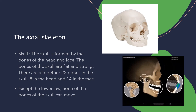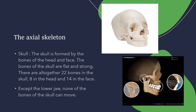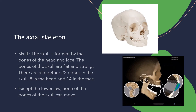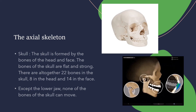The bones of the skull are flat and strong. There are altogether 22 bones in the skull — 8 bones form the cranium (head region) and 14 bones form the face.